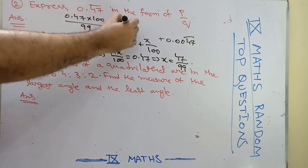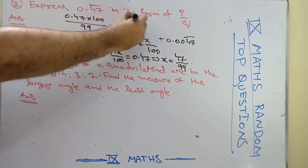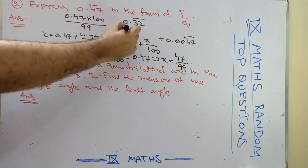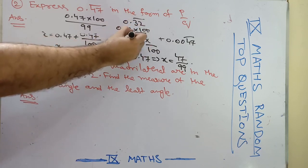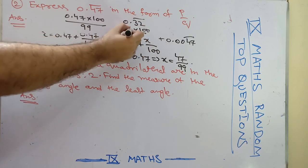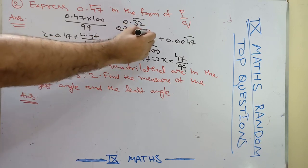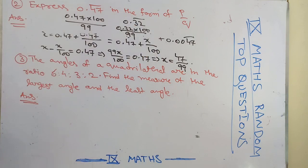That is it. Suppose they are given 0.32 bar: 0.32 into 100 divided by 99. Because two numbers are recurring, you will get 99 into 100. Simply like this, you can apply the technique.